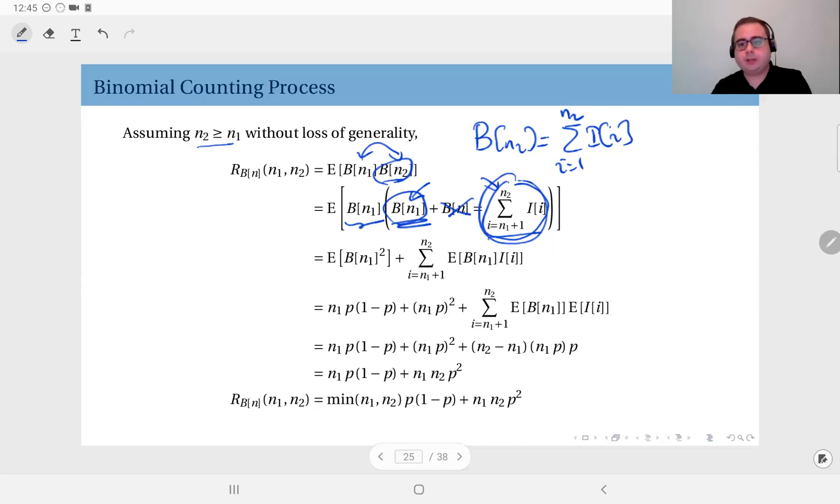Okay, that is the great thing about this, because now I can write this as expected value of b of n1 squared, this term here, and this product here, expected value of b of n1 times this sum.